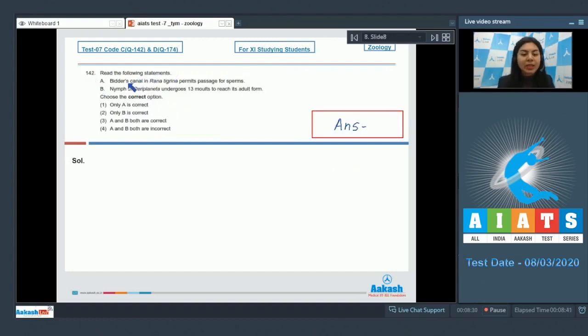Question 142: Read the following statements. Statement A: Bidder's canal in Rana tigrina permits passage for sperms. B: Nymph of Periplaneta undergoes 13 molts to reach its adult form. Choose the correct option: only A is correct, only B is correct, A and B both are correct, or A and B both are incorrect.